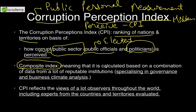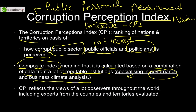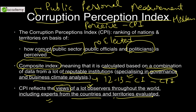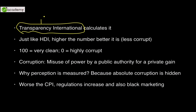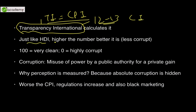CPI is a composite index, meaning it is calculated based on a combination of data from many reputable institutions — around 12 to 13 — that specialize in governance issues and business climate analysis. These institutions send their reports, on the basis of which the composite index is created. CPI reflects the views of observers including experts who live in the countries and territories being evaluated. Transparency International (TI) is the body which calculates CPI — please remember this as it is asked frequently.